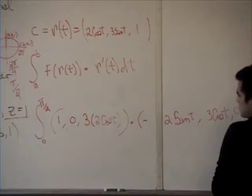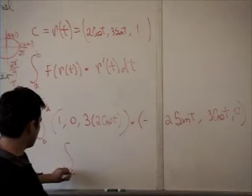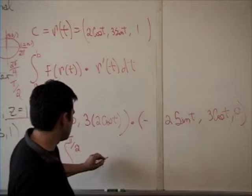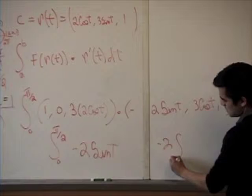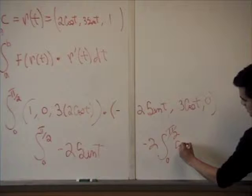Putting everything together, dotting it, you should get the answer of the integral from zero to pi over two of negative two sine of t. You take that two out of the integral, which will be negative two times the integral from zero to pi over two of sine of t.